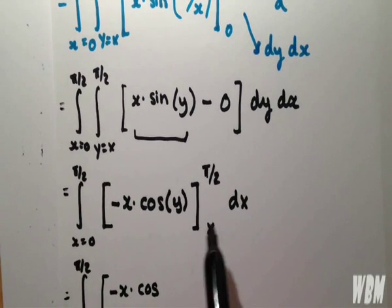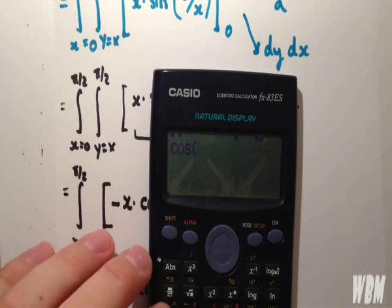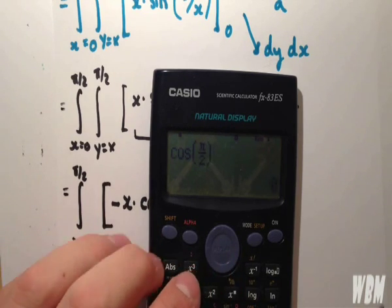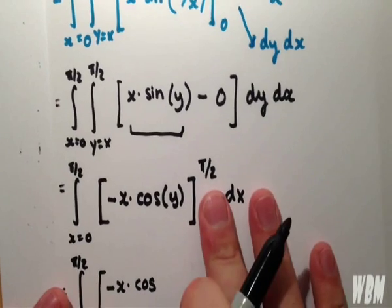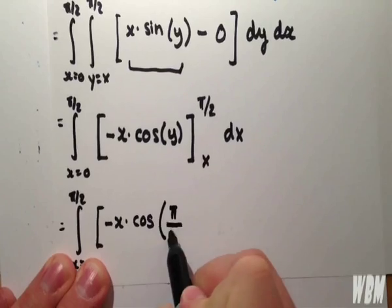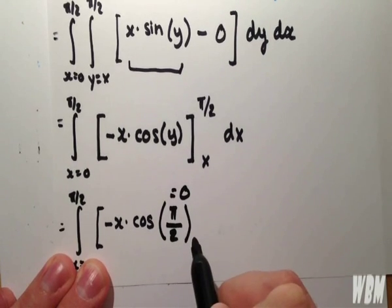So we have minus x cos of pi over 2. Now, to make sure we get the correct value, we'll input into a calculator.